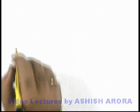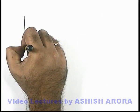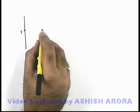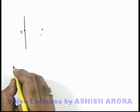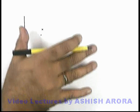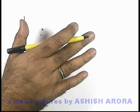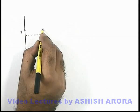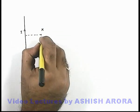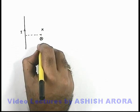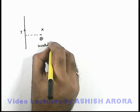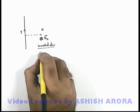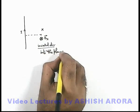In continuation, if we take some more examples to analyze the direction of magnetic field: say if this is a wire carrying a current i, and we wish to find out the direction of magnetic field at a point X. Then by using the right-hand thumb rule, if we place the thumb along the direction of current, the curved fingers will point in the downward direction. So at point X, the magnetic field will be in the direction into the plane of paper, denoted by a cross in a circle.